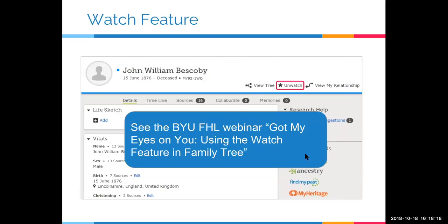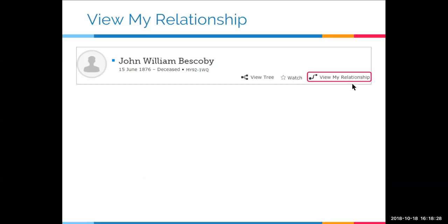The next option is 'View My Relationship,' which is one of my favorites. When you click it, a visual pops up on screen showing how you're related to the person. In this case, I'm at the bottom and it shows that I go up to my common ancestor with John William Vescovy, then shows the generations down to him. So I can see exactly how I'm related — here's my parent, grandparent, great-grandparent, and then your parent, great-grandparent, and so forth.